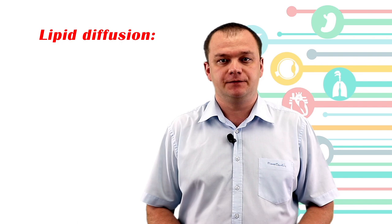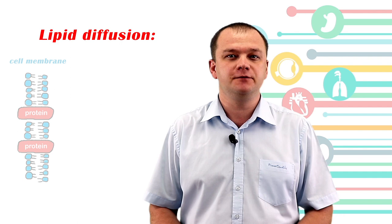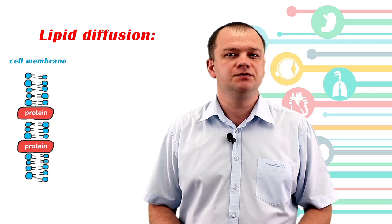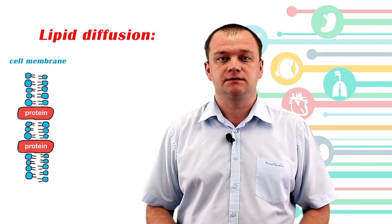The last type of diffusion is lipid diffusion — diffusion through the lipid cell membranes, through the lipid bilayer. Lipid diffusion depends on relatively high lipid solubility of drugs. Ionization of drugs may markedly reduce their ability to permeate membranes. Therefore, we should understand that lipids mean cell membranes and water means intracellular and extracellular space.